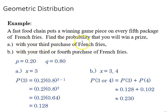A, with your third purchase, X equals three. The probability of three equals 0.2 times the complement 0.8 raised to X minus one, three minus one, which is two. That works out to 0.128.